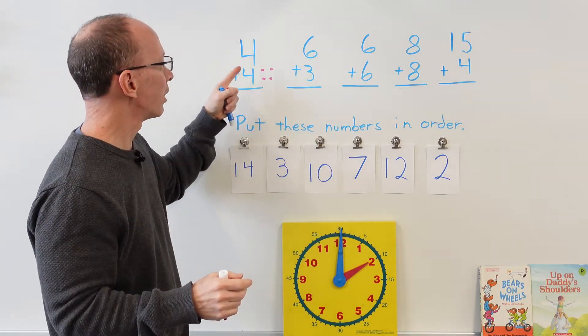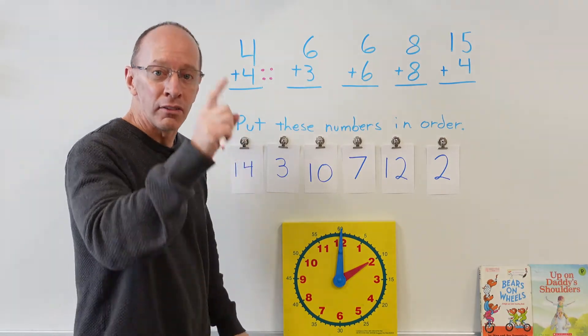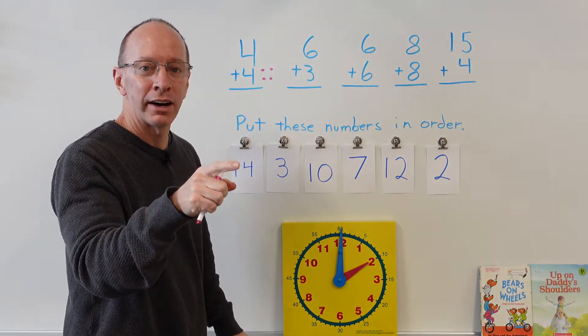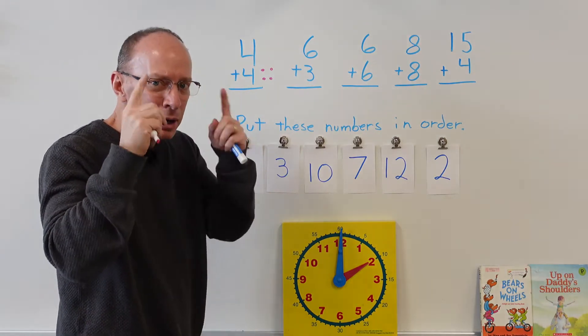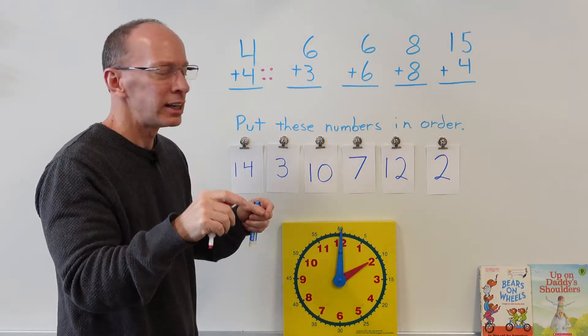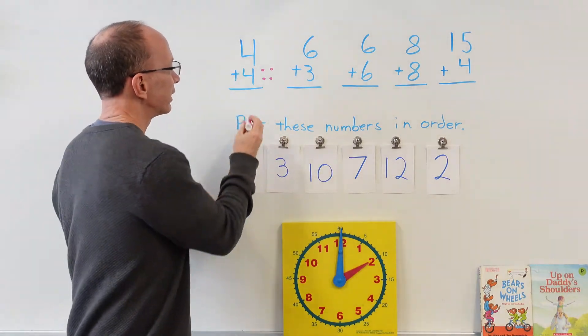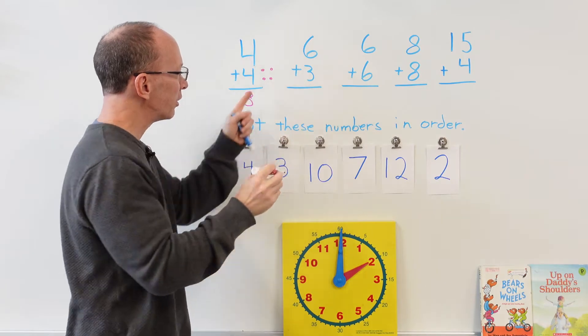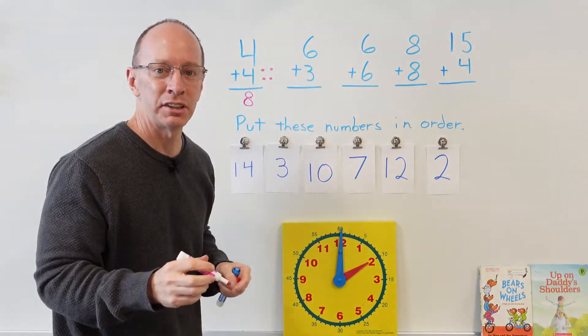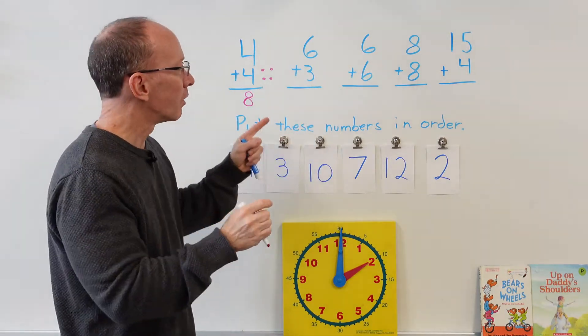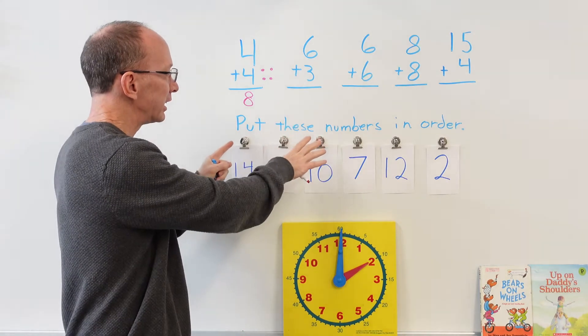So when I do four plus four, I'll go four and then I'll go four, five, six, seven, eight. I'm counting those dots in my mind and I can kind of see those, so I would put the number eight right here. But go ahead and put dots next to your number.